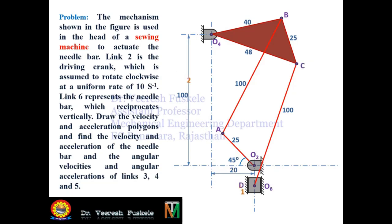This is the configuration diagram of the mechanism. We can see that points O2, O4, and O6 are the fixed points of the frame of the sewing machine. Link O2A is a crank rotating in the clockwise direction, and this link is connected to the ternary link at point B with the help of link AB. Further, the ternary link is connected to the slider — the needle bar D — with link CD, so the slider moves vertically and the needle moves up and down.